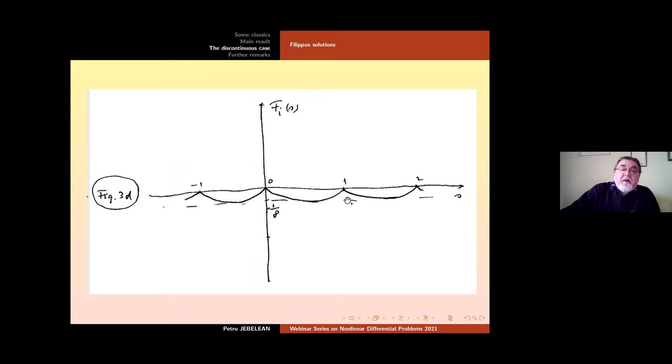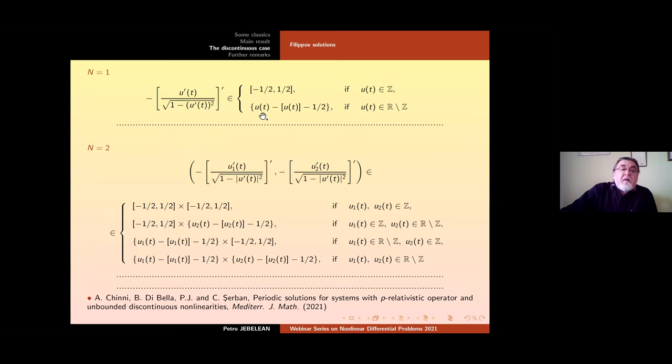Now these are two examples in the case n=1. This system has at least two T periodic solutions geometrically distinct periodic solutions and in the case n=2, all the results here.